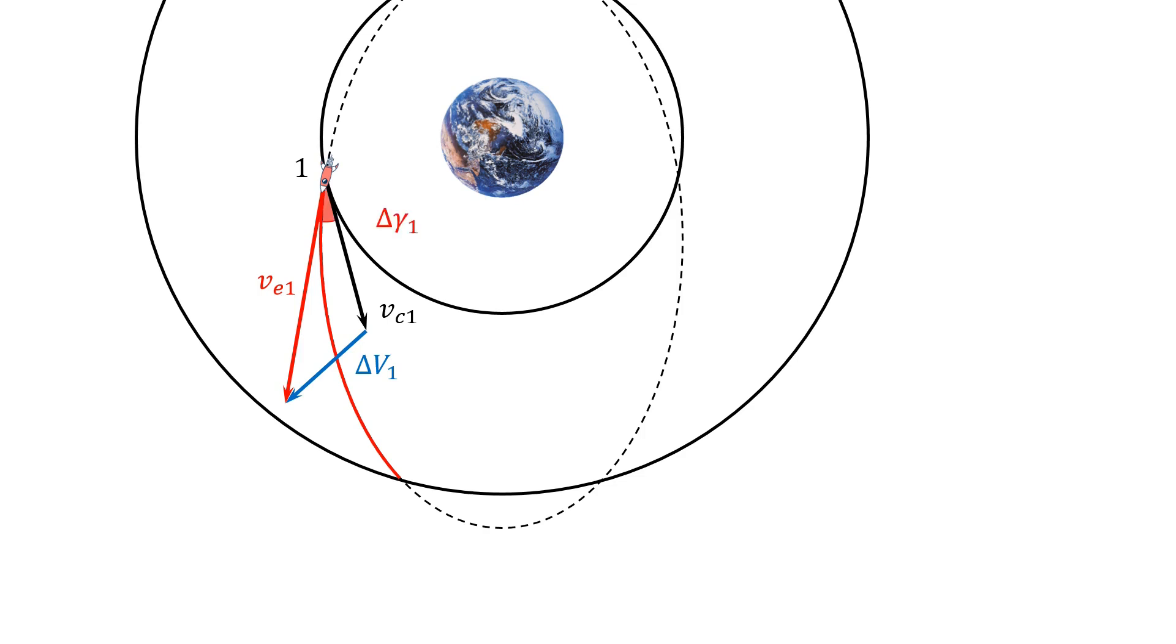We should also note that the spacecraft has to also adjust its flight path angle to get into the transfer ellipse trajectory. This means the spacecraft not only has to change the velocity magnitude, but also its direction.